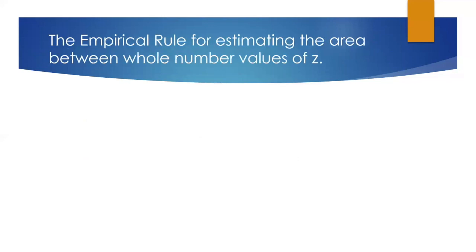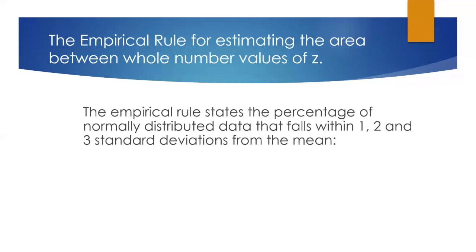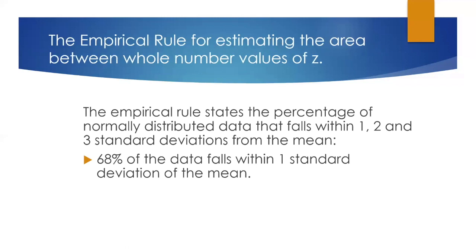There's a common rule called the empirical rule for estimating the area between whole number values of z. The empirical rule states the percentage of normally distributed data that falls within one, two, and three standard deviations from the mean. 68% of the data falls within one standard deviation of the mean.